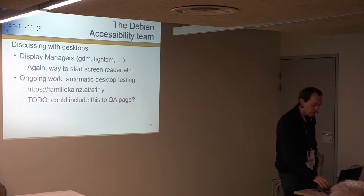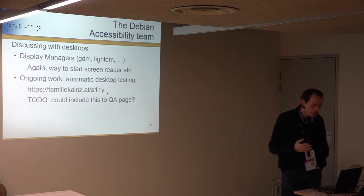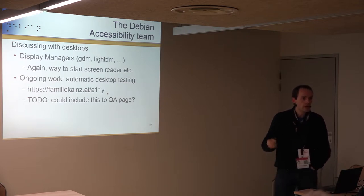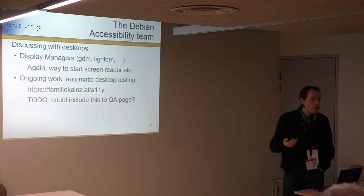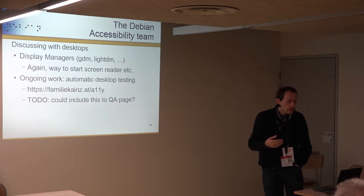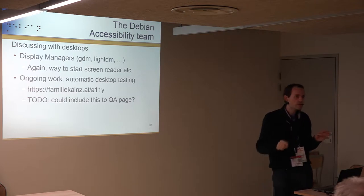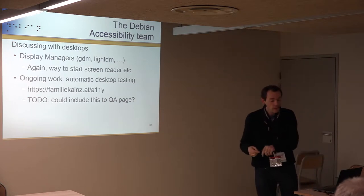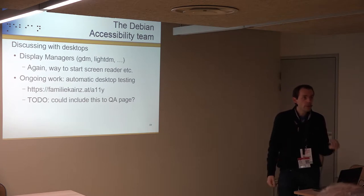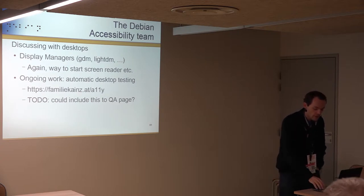Simon Keynes started an automated testing framework — not yet official — that checks accessibility across all kinds of Debian desktops. We'd like to include this in the quality assurance page once it's stable enough, so developers see a red light when something is wrong accessibility-wise, and they reach out to the accessibility team or investigate before asking for help.